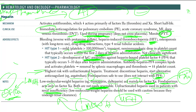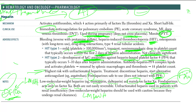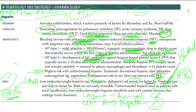Low molecular weight heparins undergo renal clearance. Unfractionated heparin undergoes hepatic clearance. So if you have a hepatic problem, give low molecular weight heparin; if you have a renal problem, give unfractionated heparin. Fondaparinux is a synthetic heparin. When we say they mainly inhibit factor 10, it means way greater than factor 2 — although they do inhibit factor 2, factor 10 inhibition is far greater.